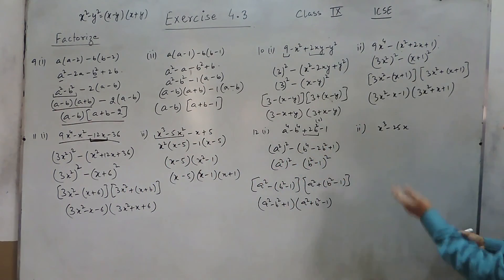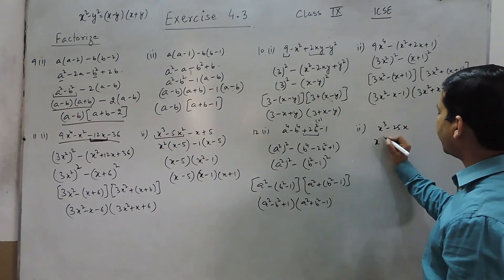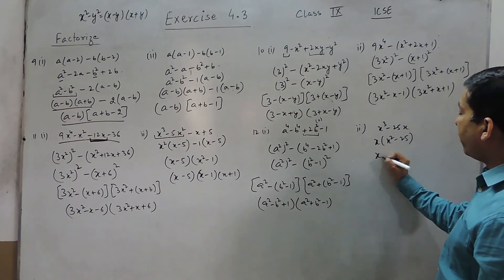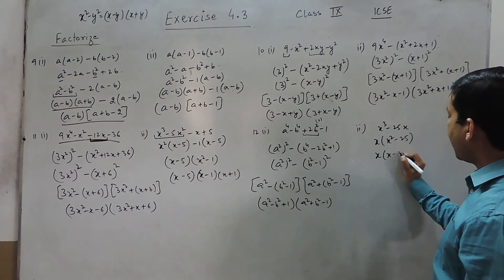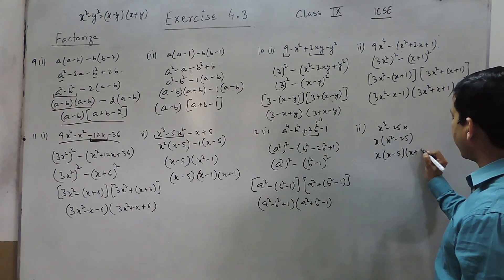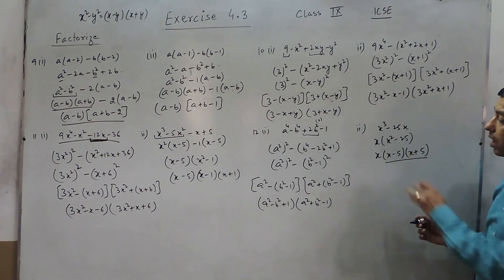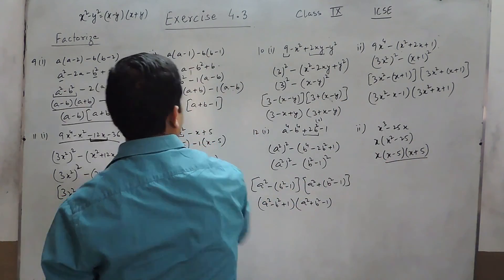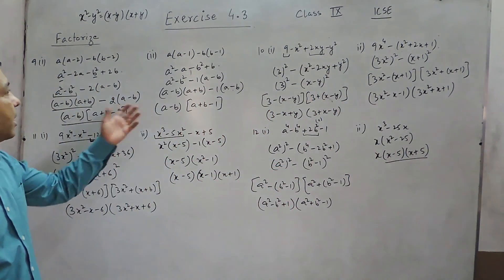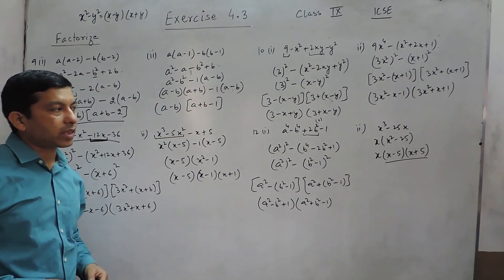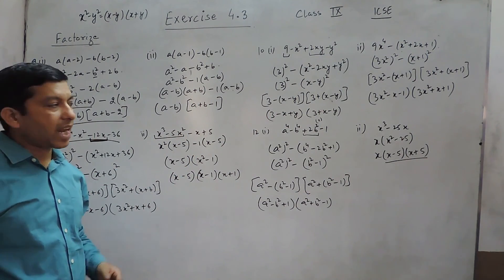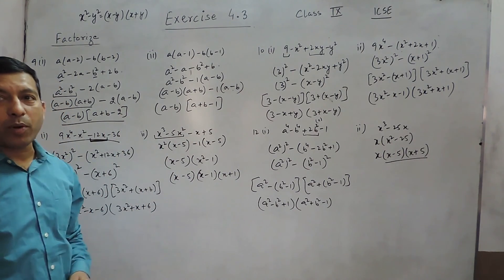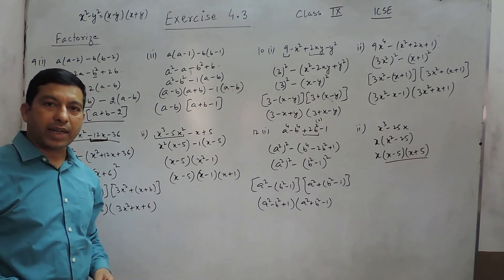In this question there are only two terms, so we can definitely take common first. Using the difference of squares identity it gives x minus 5 and x plus 5 as the two factors. This is a very simple question in comparison to the others — it should perhaps be question 1 or 2, but in this exercise it is question 12. In the next class we will cover the remaining questions. If you have any problem or doubt you can email or contact us. Thank you.